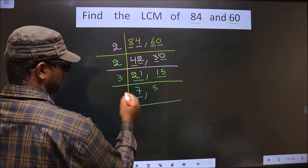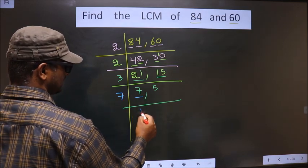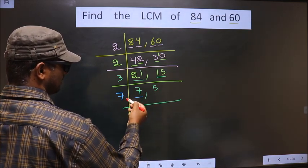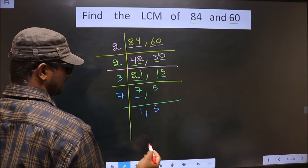Now, 7 is a prime number, so we take 7 ones are 7. 5 is not divisible by 7, so you write down 5 as it is.